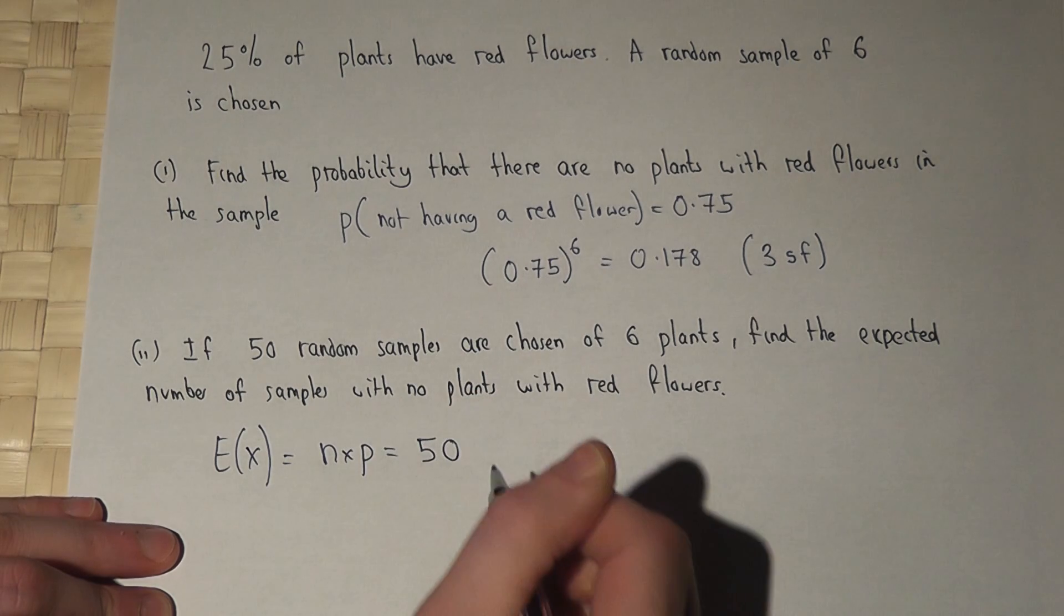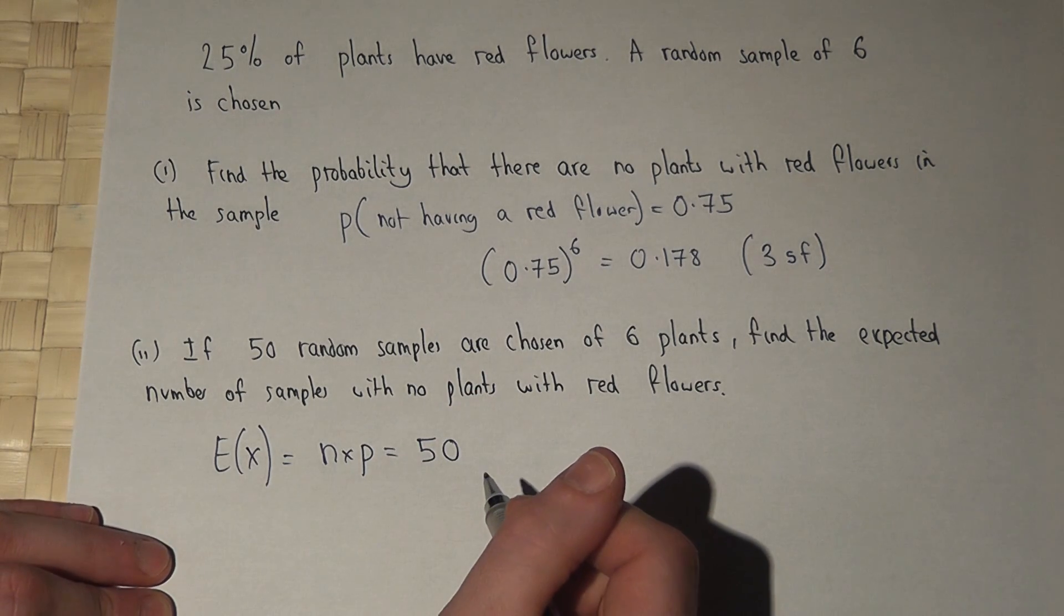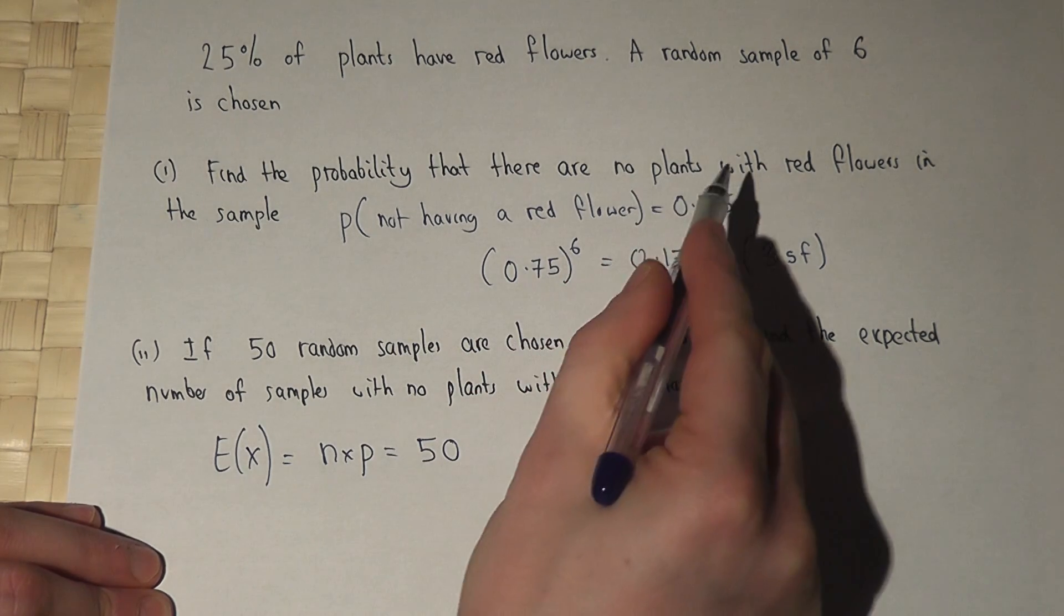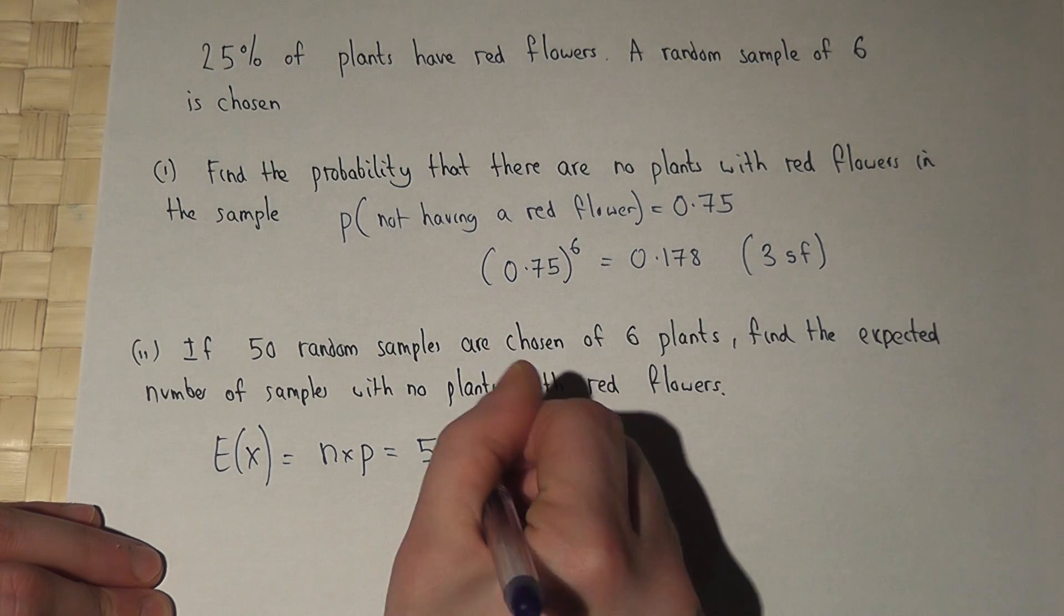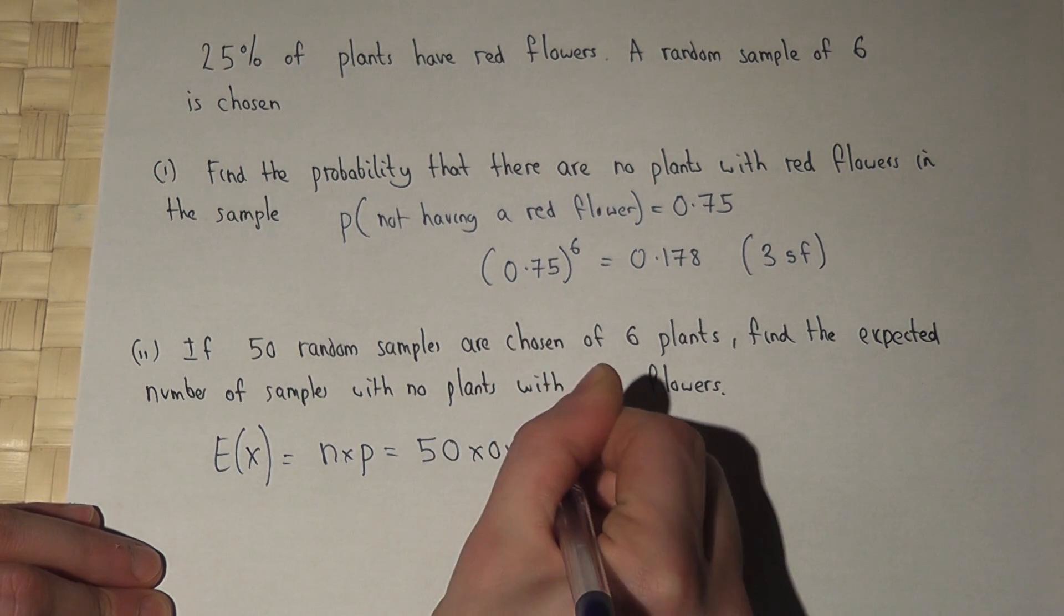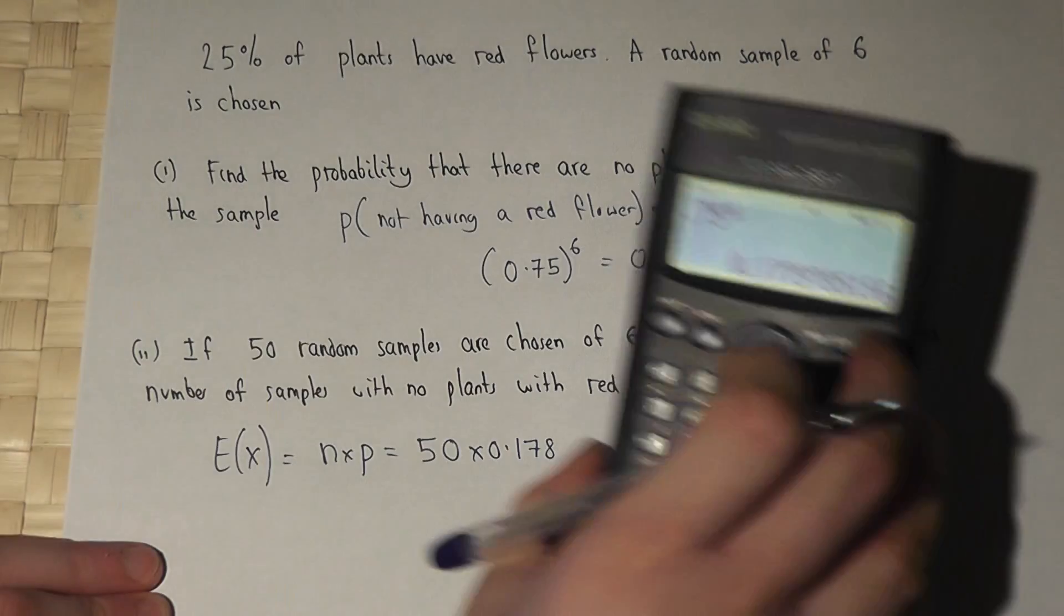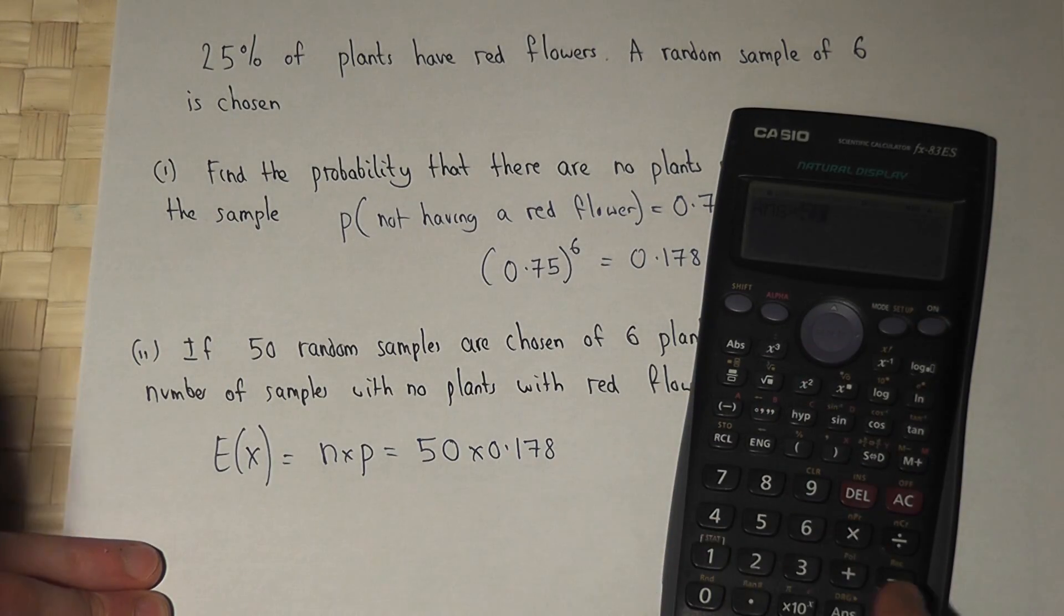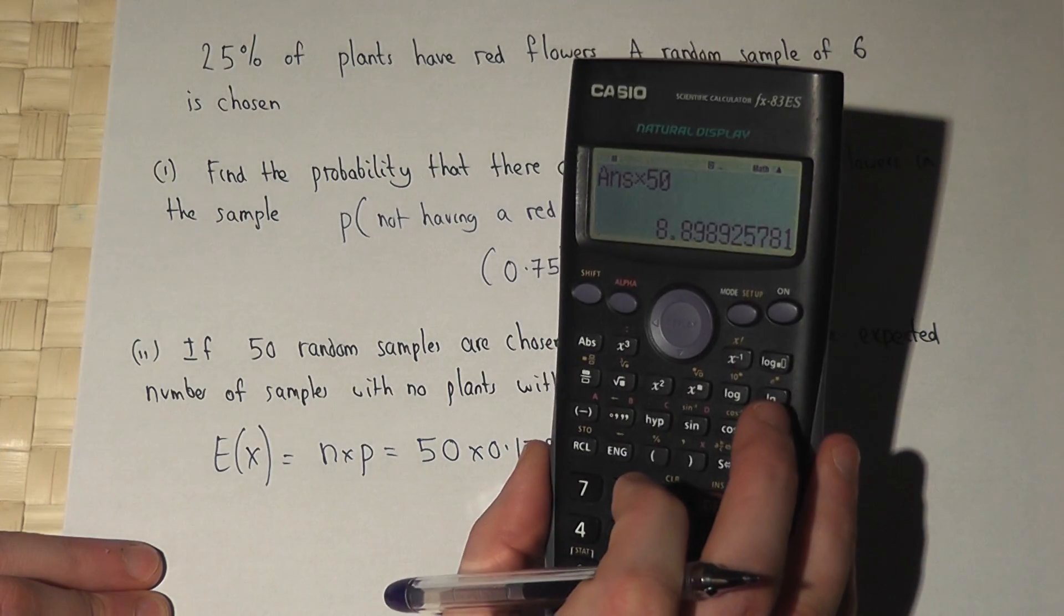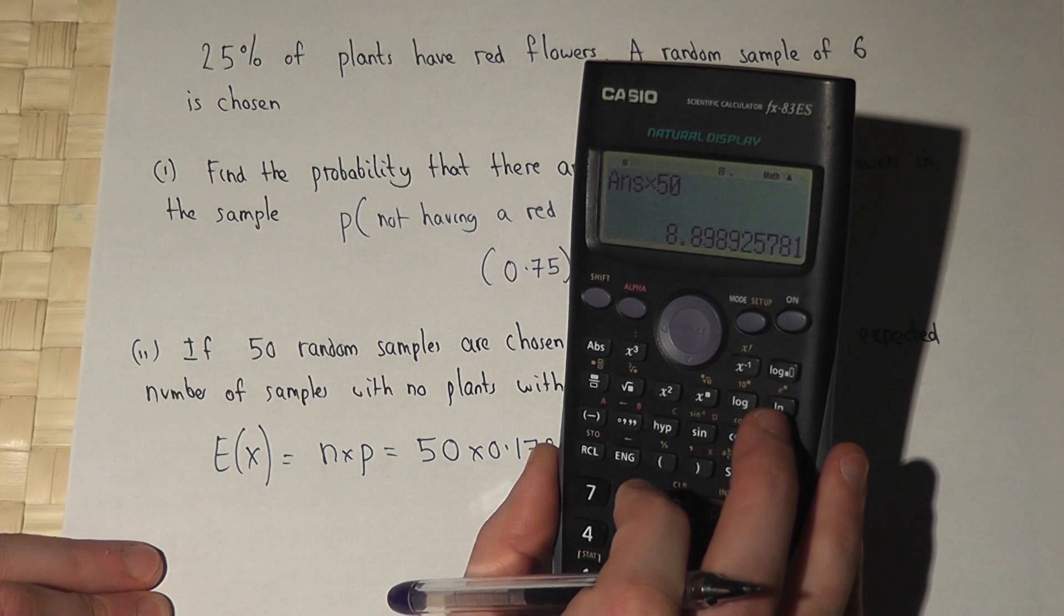The chance that each sample contains no plants with red flowers is 0.178 to three significant figures, so we times our previous number by 50 to get an answer of 8.90.